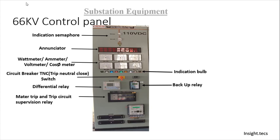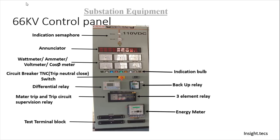Then, there are three element relays. For a transformer, WTI, OTI, and various kinds of such protections can be given through the three element relay. If any fault occurs due to such conditions, then these kinds of relays are operated. Next, there are test terminal blocks and an energy meter which will continuously record the energy.